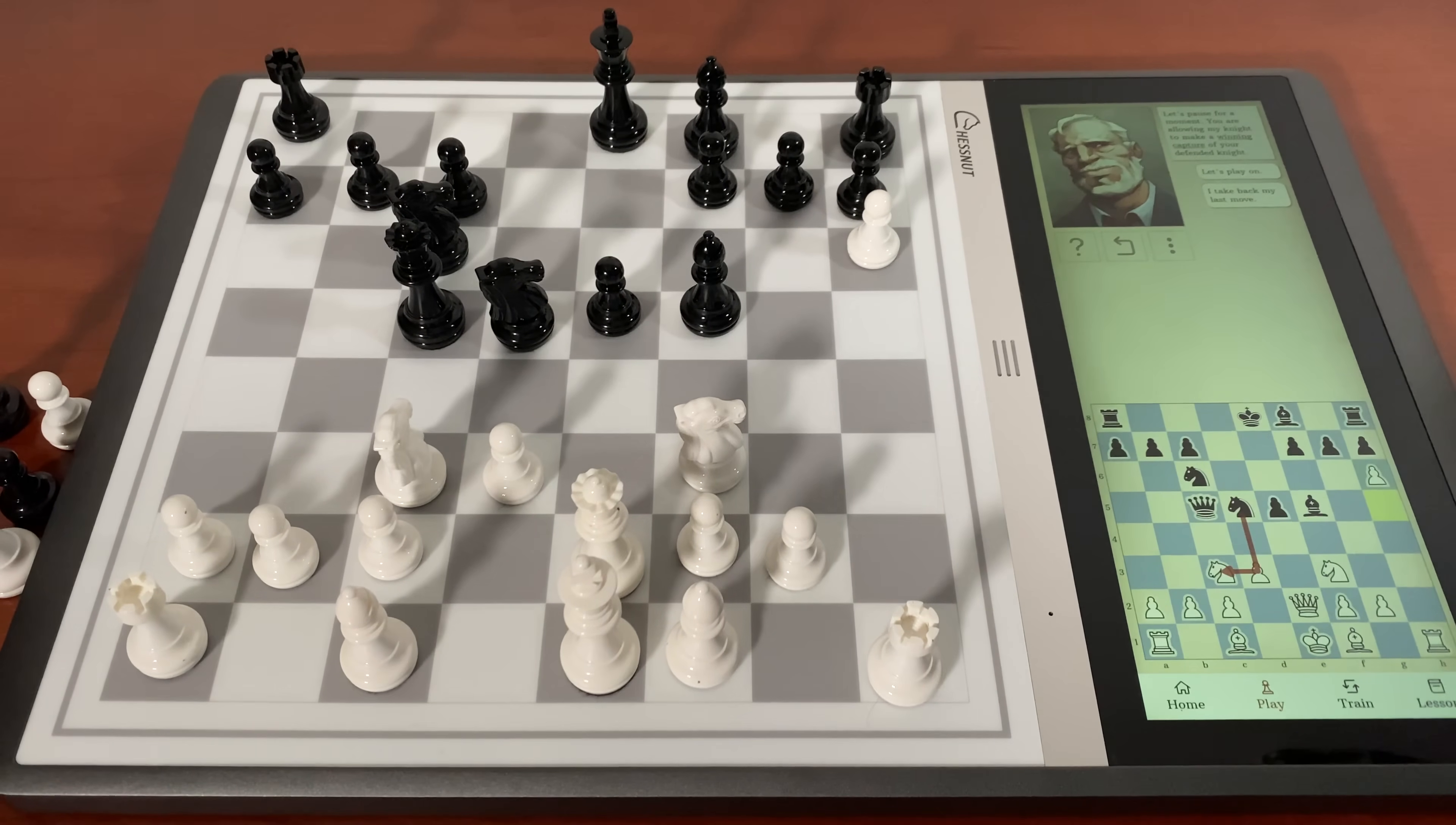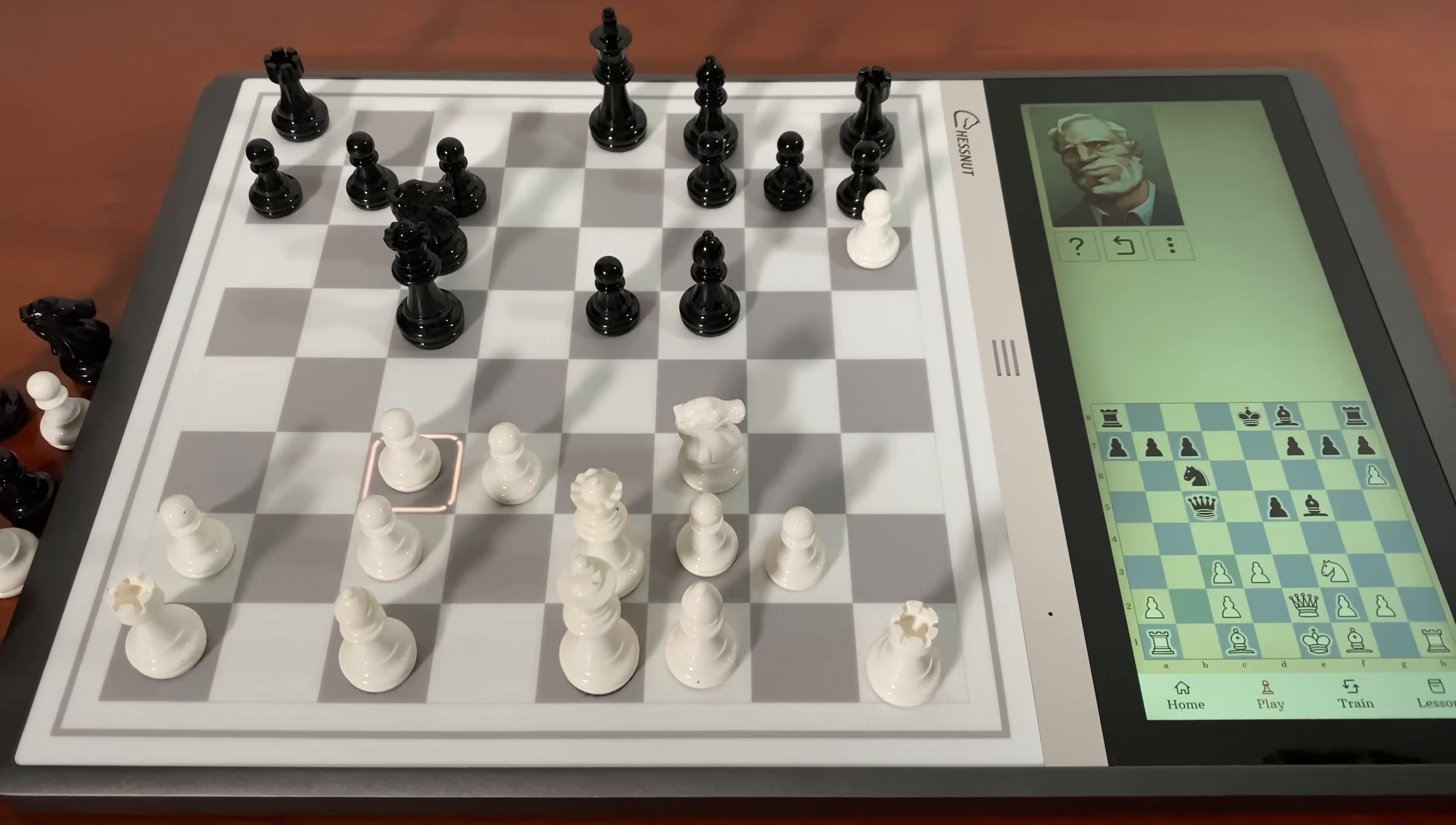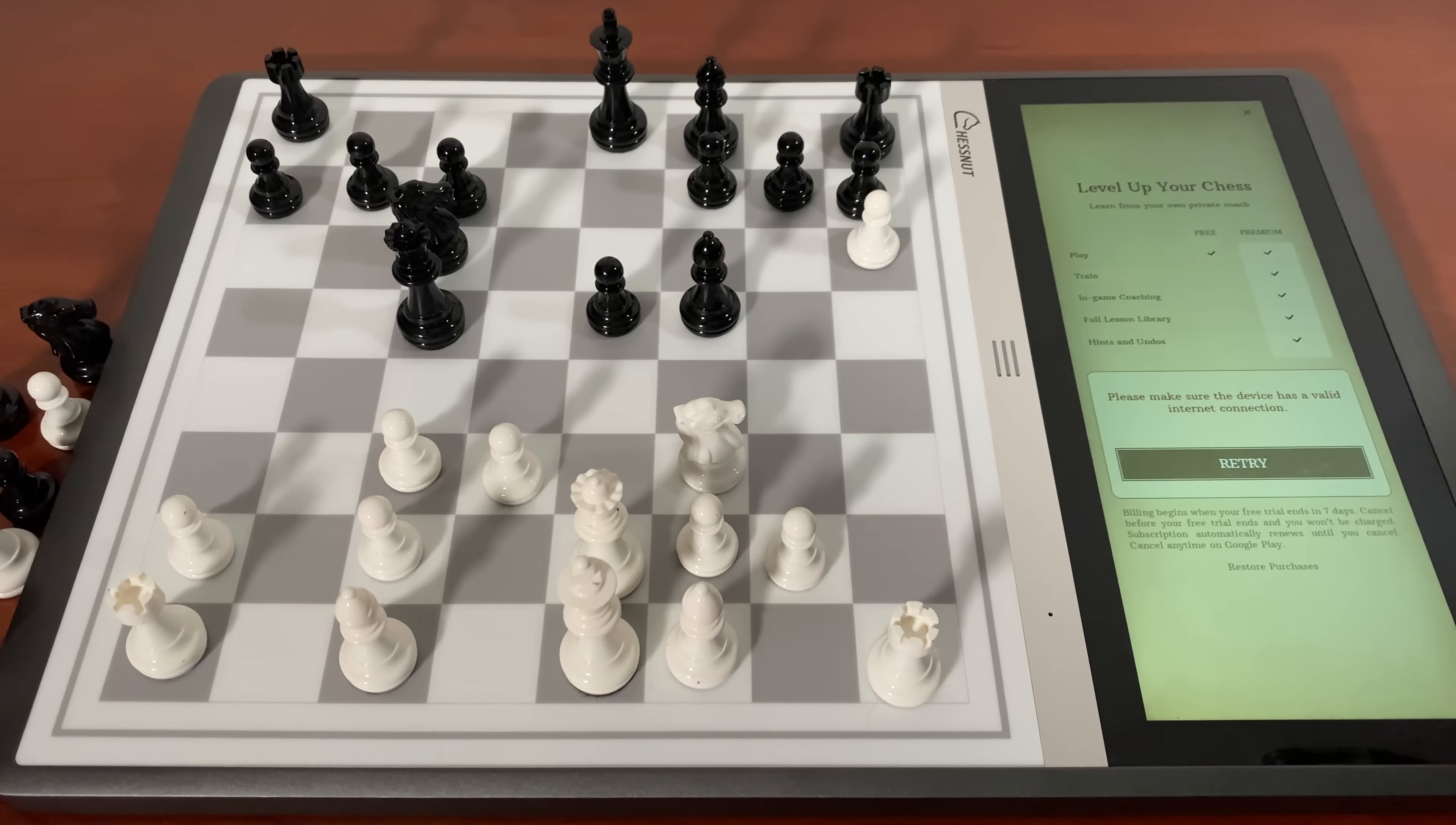Let's pause for a moment. You are allowing my knight to make a winning capture of your defended knight. So I'm just going to say just do it. So I just gave it a rook. There we go. So I just want - okay, so this gives me feedback as I play the game.